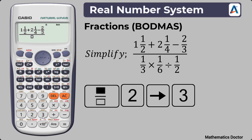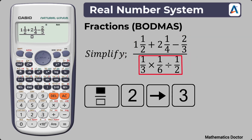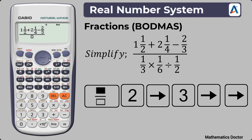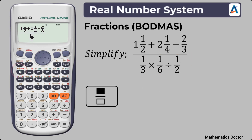We have now successfully written all the fractions at the numerator of this question. Let's now get to the denominator. To get to the denominator, shift the arrow key so the indicator drops to the bottom — shift the arrow key right two times for the indicator to drop to the bottom box.